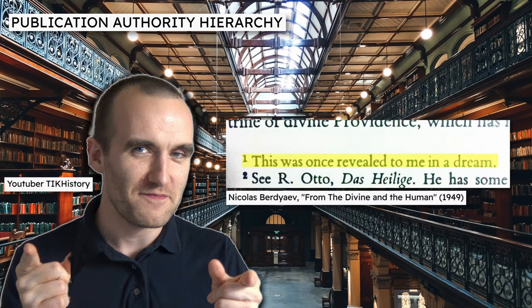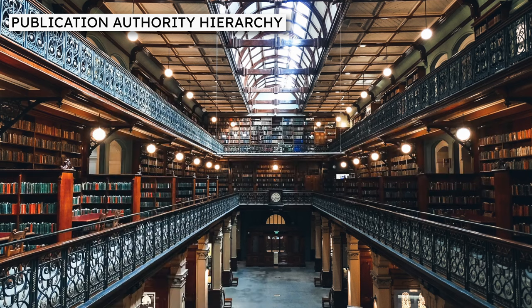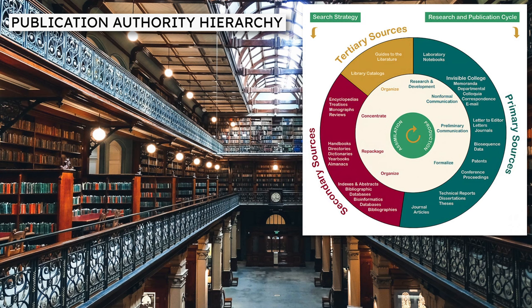Research on academic topics, whether in humanities or the STEM fields, consists of a series of activities starting with the least formal, least validated, and least authoritative sources, and ending in the most formal, well-validated, and most authoritative sources. We need to understand this hierarchy before conducting research in any field. On screen now is an image depicting the academic research and publication cycle. To understand the authority hierarchy, we'll look at the right-hand side of this image, which is highlighted in green, and start at the top, at the 12 o'clock position.